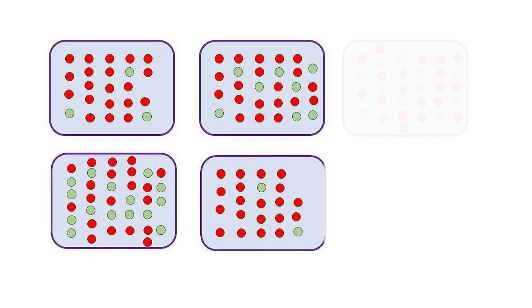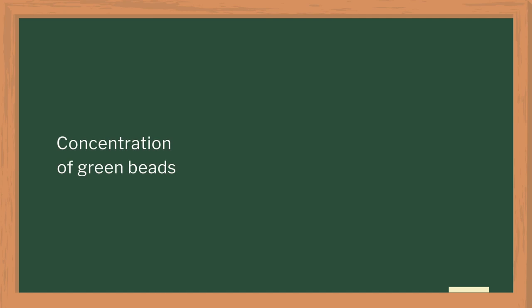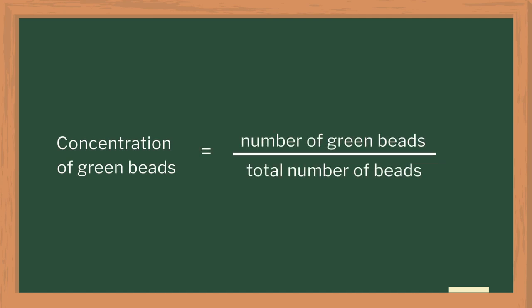We then talked about the importance of concentration. In my experience, students often make the mistake of assuming concentration is a property of a substance. We discussed how HCl in battery acid is the same acid present in toilet cleaners, although the toilet cleaner is dilute whereas battery acid is highly concentrated. I then gave students a worksheet asking them to find the concentration of green beads in each box — each box contains 20 red and some green beads — by finding the ratio of green beads to total beads.